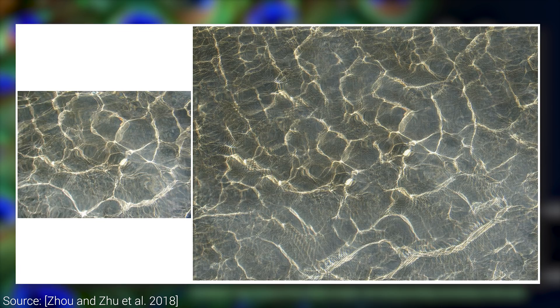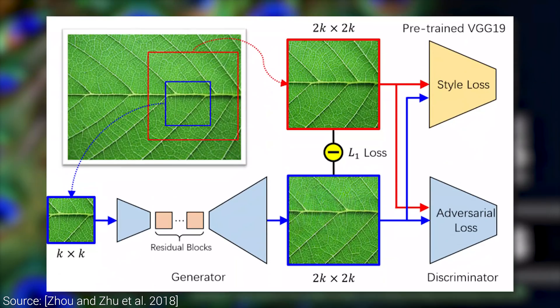This is a neural network-based technique, so first the question is: what should the training data be? Let's take a database of high-resolution images, cut out a small part and pretend that we don't have access to the bigger image, and ask a neural network to try to expand this small cutout.